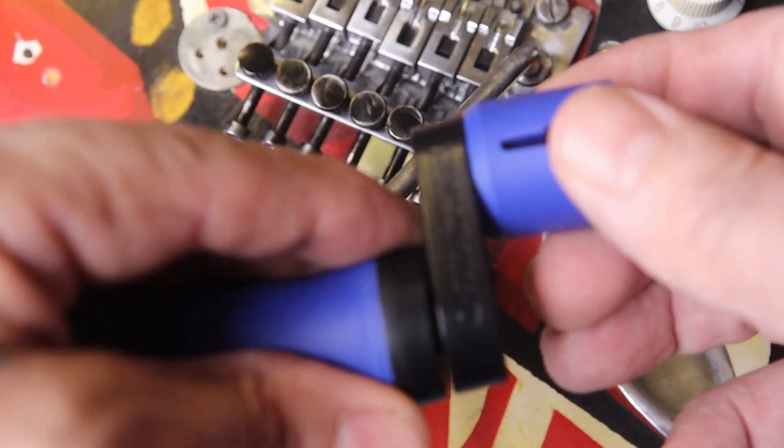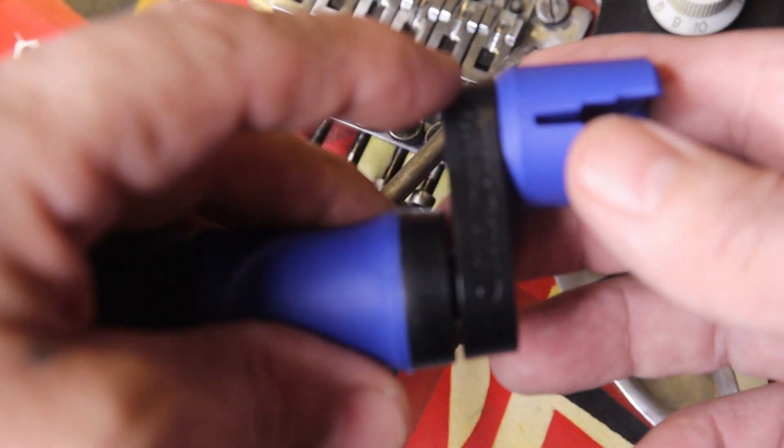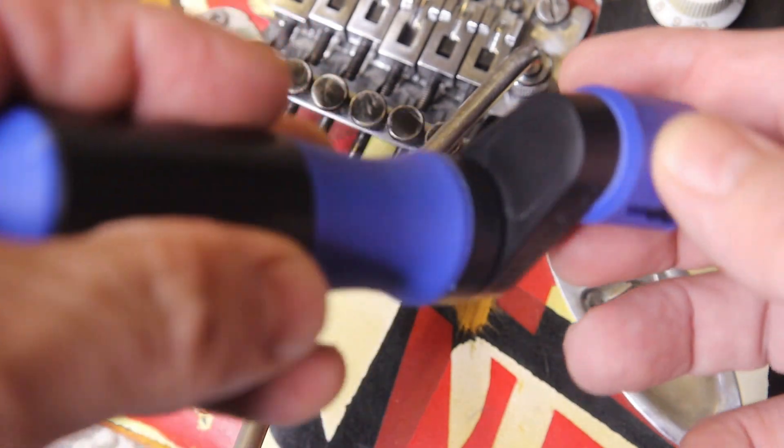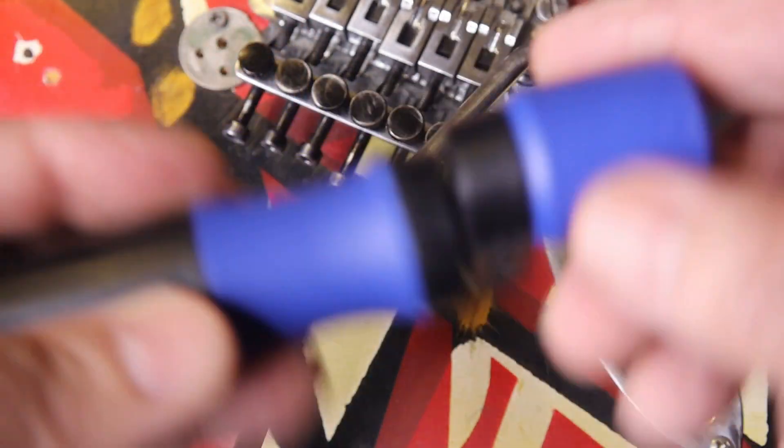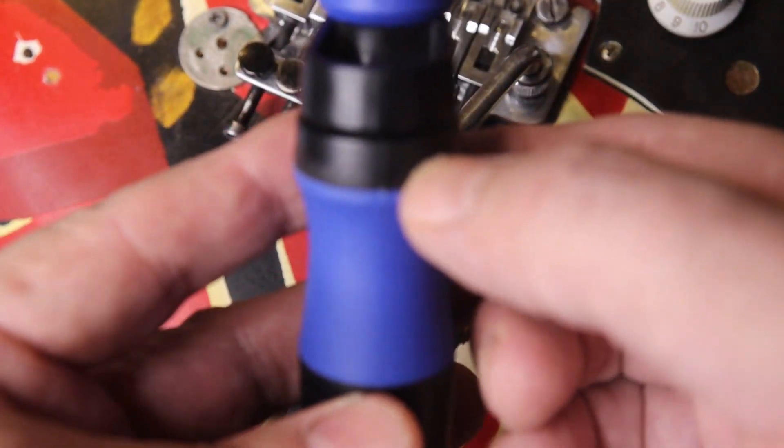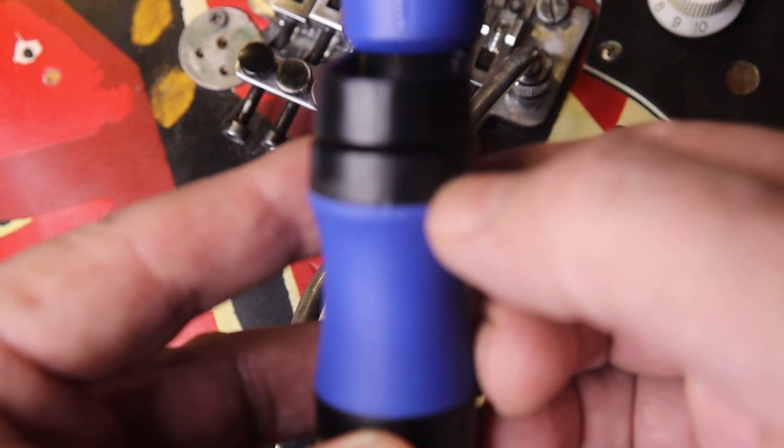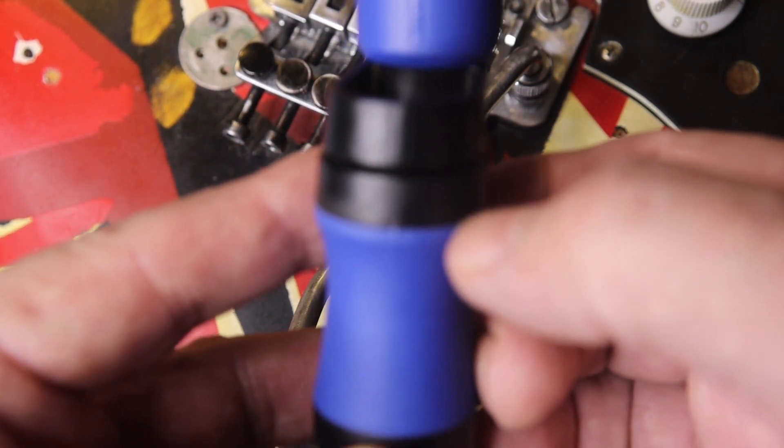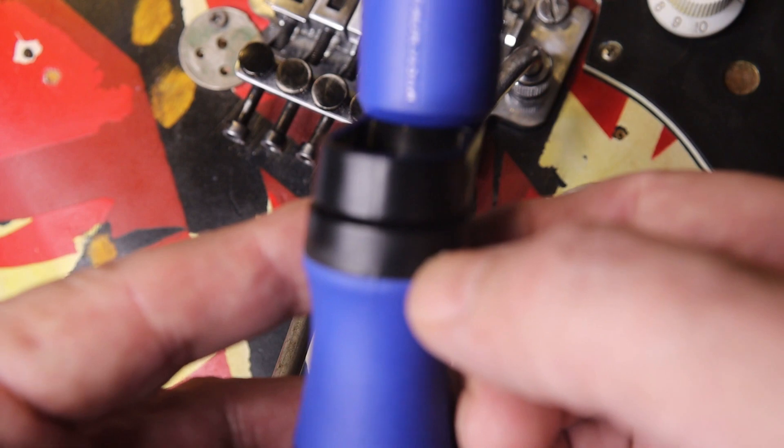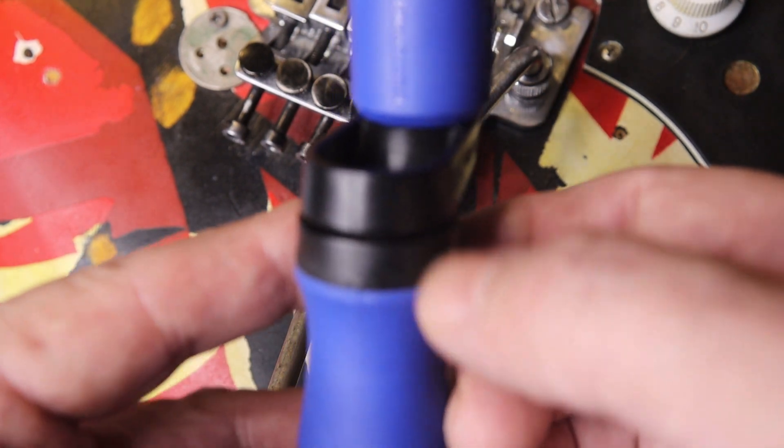It has inside here a bearing, like a roller skate bearing or a skateboard bearing inside here, so you get a really good nice spin on it.